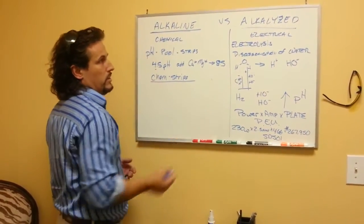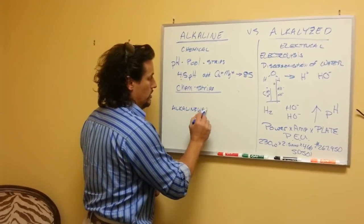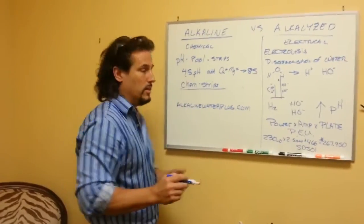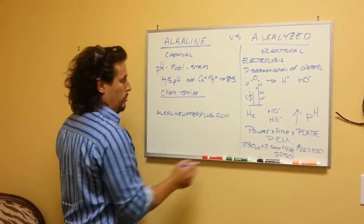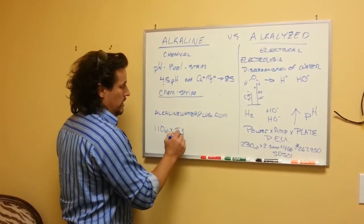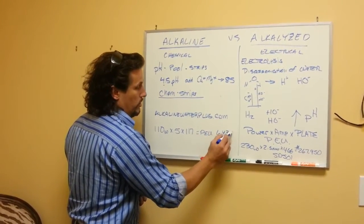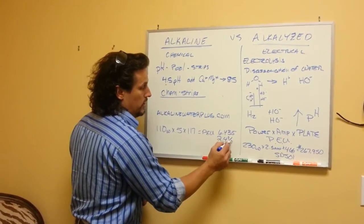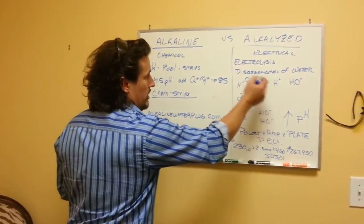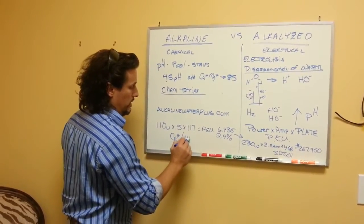I recommend if you want to compare these other units, Alkaline Water Plus has a great website — it's actually a competitor's website — and it proves the power output. Most of the units there have 110 watts times a half amp, and the standard plate size is 117 square inches, which gives you a PEU of 6,435, or approximately 2.4% of this unit's power. Because they don't have enough power to create the disassociation of water, they have to add calcium and/or magnesium to change the water.